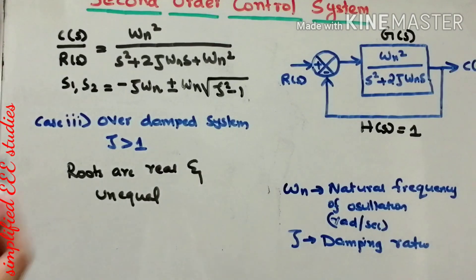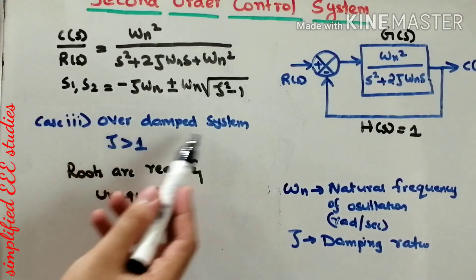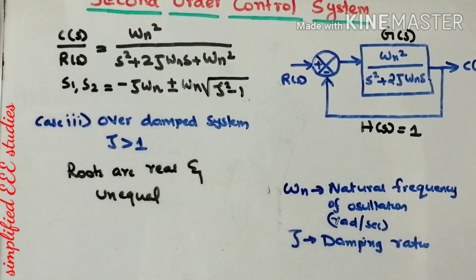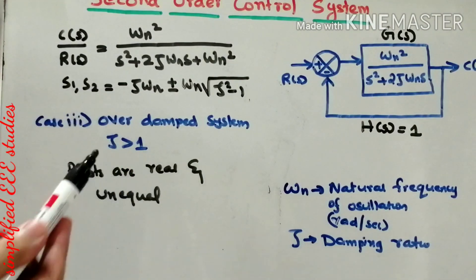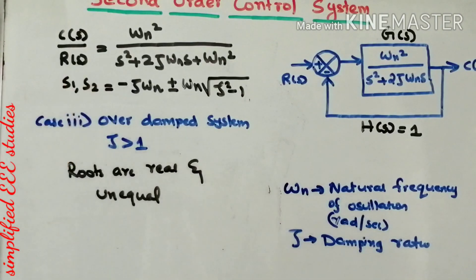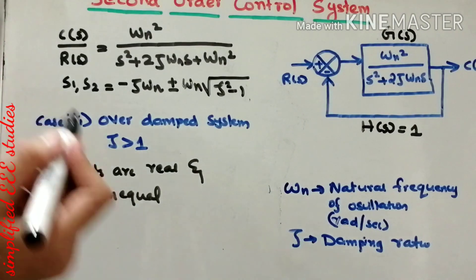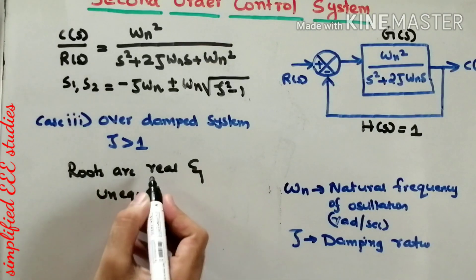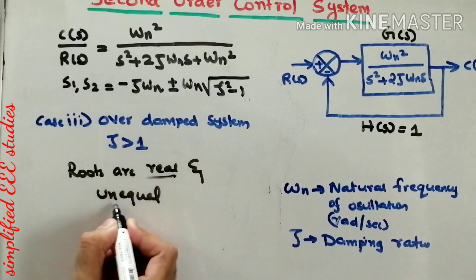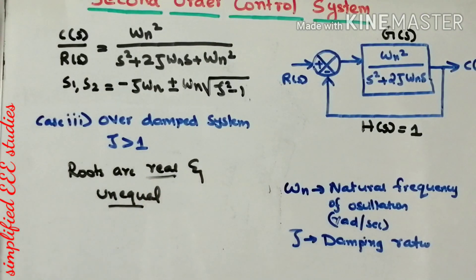Moving to Case 3, the overdamped system where zeta is greater than 1: substituting any value greater than 1 for zeta, for example 1.5, the roots are found to be real and unequal. That is the conclusion for overdamped systems.